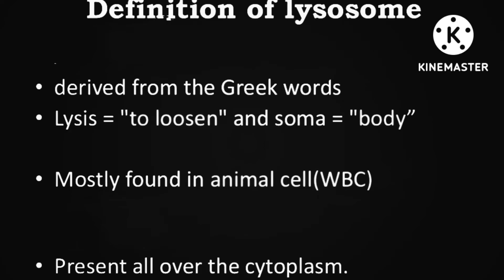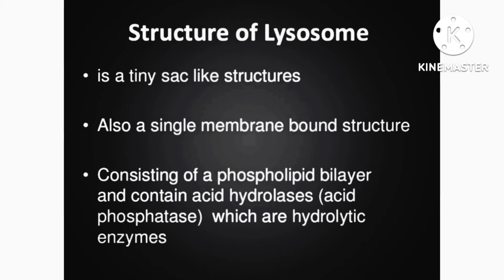Lysosomes are derived from the Greek word: 'lysos' means splitting and 'soma' means body. These are found in animal cells and present all over the cytoplasm, where they carry out the digestive work for the cell.